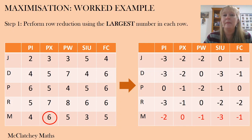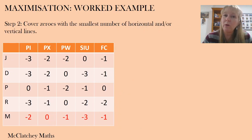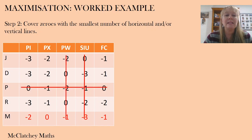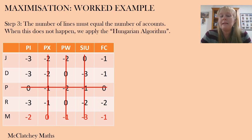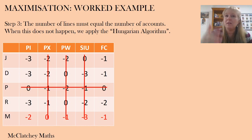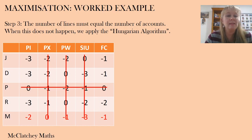Now we've done our row reduction. The next step is to cover all our zeros with the smallest number of horizontal and/or vertical lines — no diagonal lines. I'm going to pass lines through all my zeros, and the smallest number I can use is four. This is a problem: the number of lines must equal the number of accounts and must be the smallest number of lines possible. The smallest possible here is four, but I need five, so I need to continue to the next step.